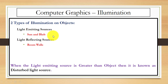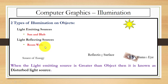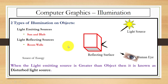Light emitting sources means sources that release light. Light can be released by the sun or a bulb. Reflecting sources are walls — room walls. For example, you can see we have a source of energy — the sun — and we have an object. When the rays fall on this object, this is the reflecting surface, and after this it is visible to human eyes.